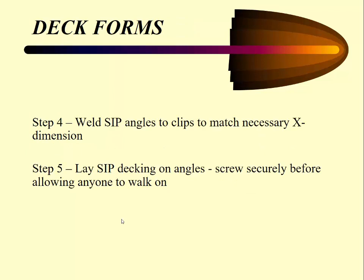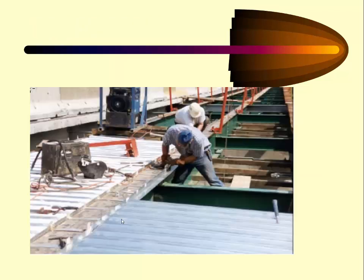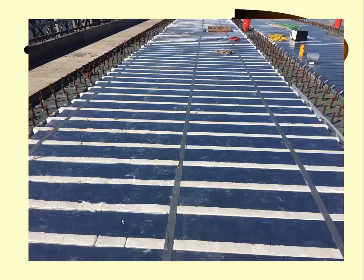The next step is to weld the stay-in-place angles to the clips to match the necessary X dimensions, and then lay the stay-in-place decking on the angles. Make sure it is screwed securely before you walk on it, and contractors need to be tied off for safety as they're installing these. Here you can see a steel job with straps, a worker welding on the angles, and stay-in-place decking being placed behind. The final product shows the decking laid with styrofoam installed — we'll talk about that later. Duct tape is used to hold it in on windy days on this lake job.